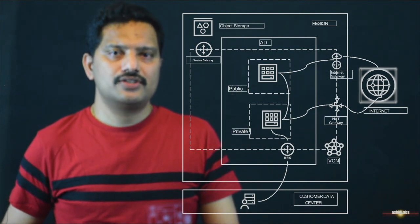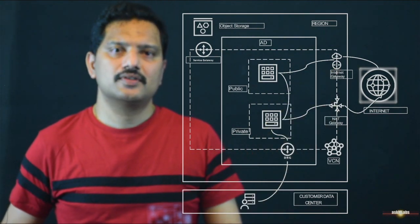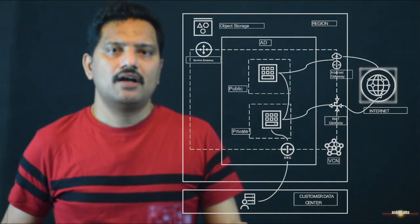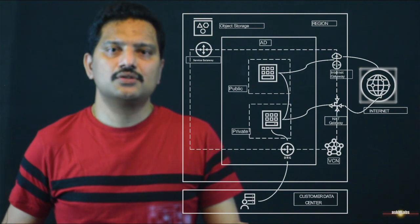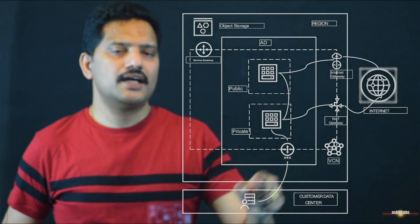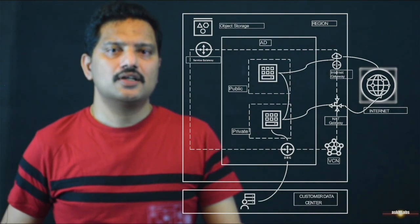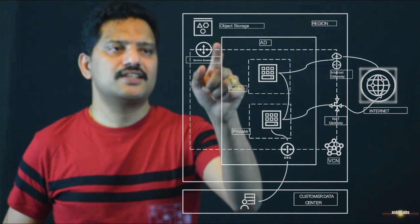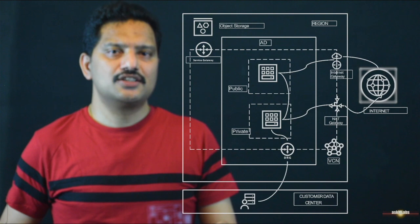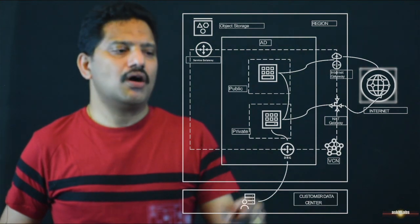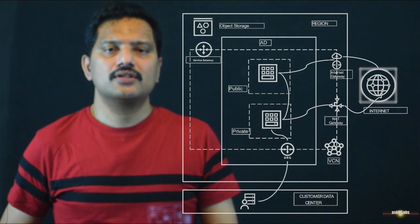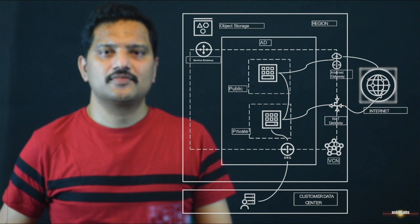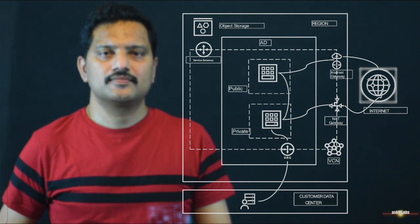Quick recap: in this demo, we saw an Internet Gateway, which provides access to the public subnet; a NAT Gateway, which provides internet access to all private resources; a DRG, which provides access to the on-premises data center from cloud resources; and a Service Gateway, which gives access to the public storage endpoint for all private network resources. That's all about the different gateways available in Oracle networking. Thanks for watching this video. If you have any questions, please comment. Thank you.